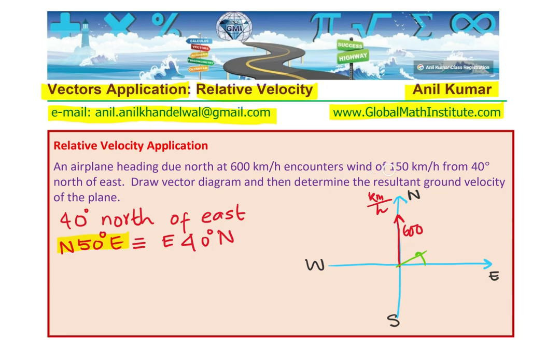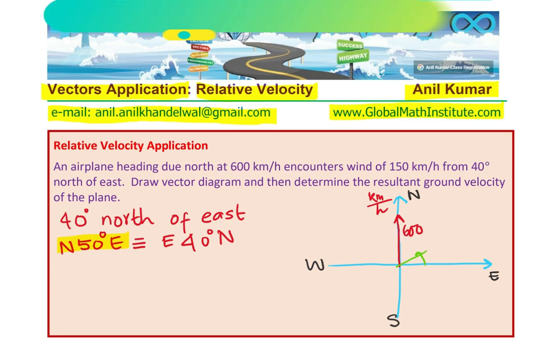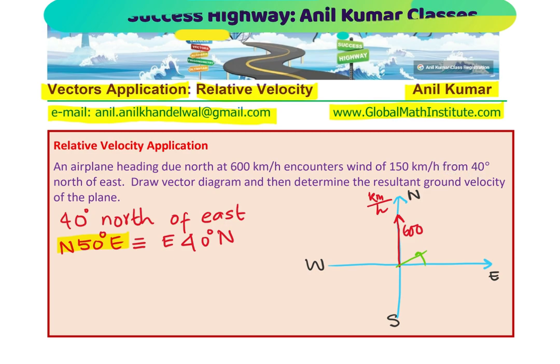Now, this length will be 150 kilometers per hour. You can make almost one-fourth of this particular length. So, what I have drawn is the length which is in the direction. Now, when I say encounters wind of 150 kilometers per hour from this angle, it means, what should be the direction? Means the direction should be like this. Do you see that? That is going to be the direction from. So, it is coming in from there.